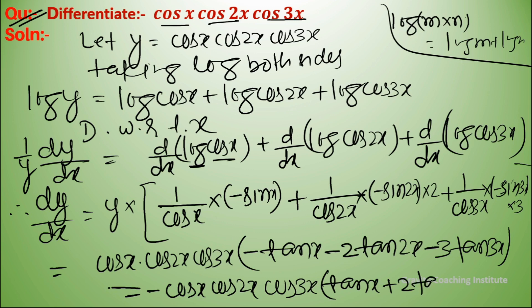Minus 2·tan(2x) minus 3·tan(3x). This is the final answer.